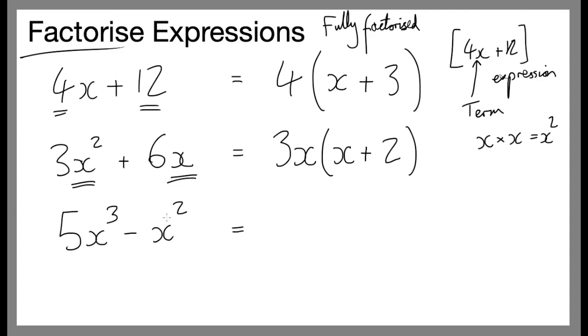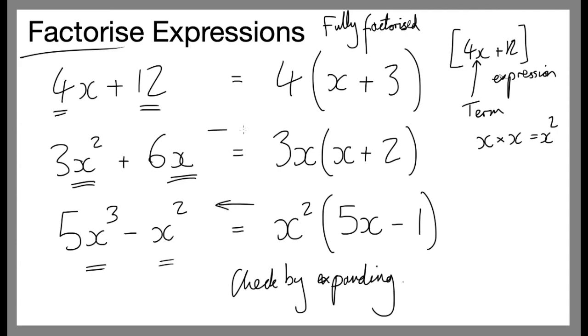Finally, 5x cubed minus x squared. There's only one number, so I'm not going to be able to put a number outside. x cubed and x squared. Well, what's the biggest number I can divide them both by? Well, the biggest number I can divide them by is x squared. So I'm going to put that outside the brackets. 5x cubed must be 5 times x squared, but also times x. So 5x goes inside the bracket. And finally, minus 1. What you can do is you can check by expanding. And if you expand, you go back this way. So going left to right, you factorise. And going right to left, you expand. They are the opposites of each other.